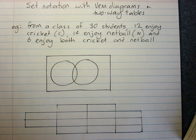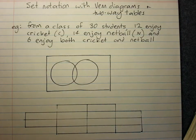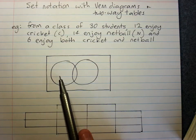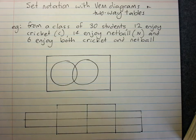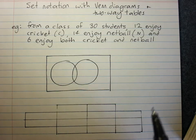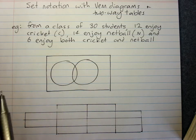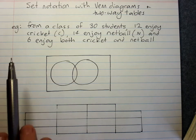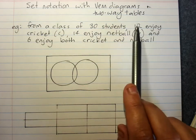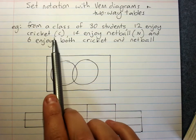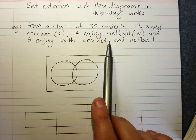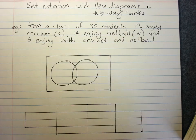Set notation with Venn diagrams and two-way tables. Last lesson we looked at Venn diagrams and placed elements of sets into the appropriate zone. You're more used to doing Venn diagrams where you place the number of elements in a set in the diagram, so we'll do an example. From a class of 30 students, 12 enjoy cricket, 14 enjoy netball, and 6 enjoy both cricket and netball. Illustrate this information in a Venn diagram.